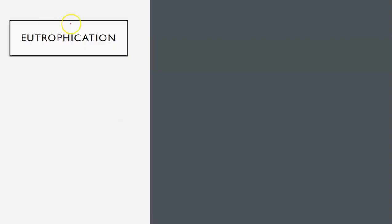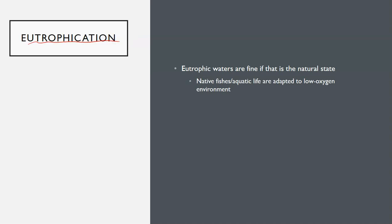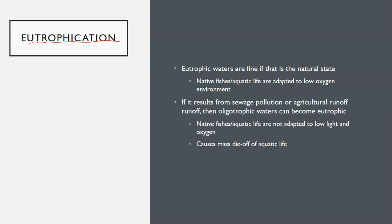A body of water can switch from oligotrophic to eutrophic because of human activity. Agricultural runoff or sewage pollution can increase nutrients in a body of water and kickstart a chain reaction that causes this switch, which can be problematic. Eutrophic waters are fine if that is the natural state and the organisms are already adapted to that low light, low oxygen environment — like carp and bullhead.